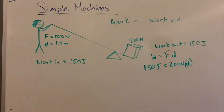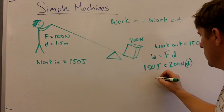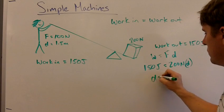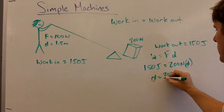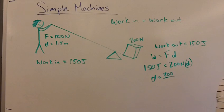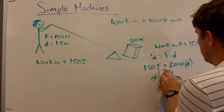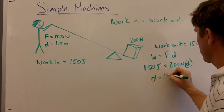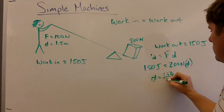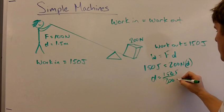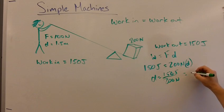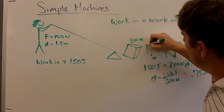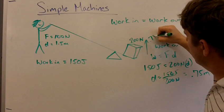We'll multiply it times D. We'll divide both sides by 200, and D will equal 150 over 200. 150 joules divided by 200 newtons is going to give us a distance of 0.75 meters. So that's how high this box will go up, 0.75 meters.